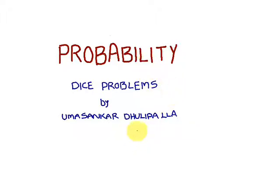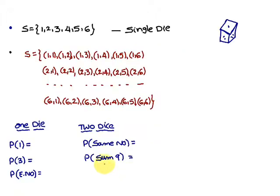Today we are going to discuss problems on dice. So the die looks like this. It has six faces. On one face you come across with one, on the other face you come across with two, on the other face you come across with three and so on and so forth. So the sample space consists